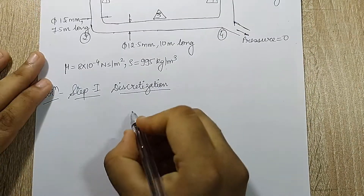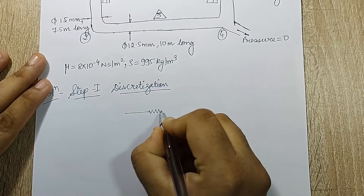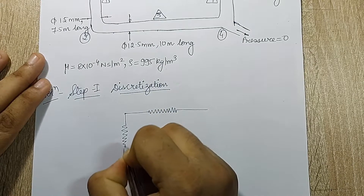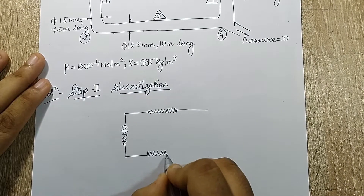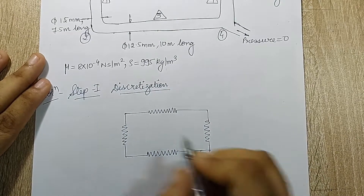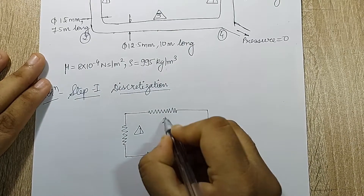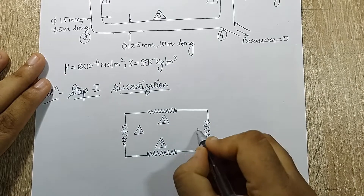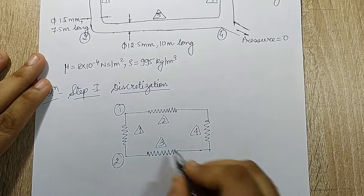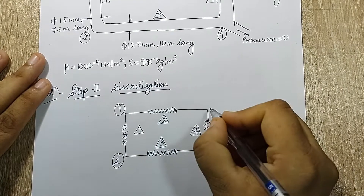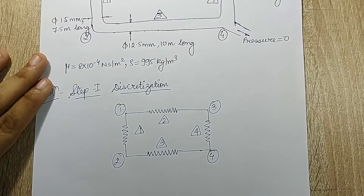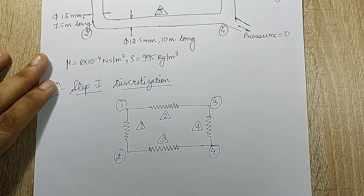Step 1 is the discretization diagram. I have four elements: element 1 between nodes 1–2, element 2 between nodes 1–3, element 3 between nodes 2–4, and element 4 between nodes 4 and 3. This is my discretization diagram.